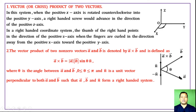And n̂ is a unit vector perpendicular to both vector a and vector b, such that vector a, vector b, and vector n̂ form a right-handed system. Theta is the angle between vector a and vector b, lying between zero degree and pi. n̂ is the unit vector perpendicular to the plane of the two vectors, taken so that a, b, n̂ form a right-handed system.